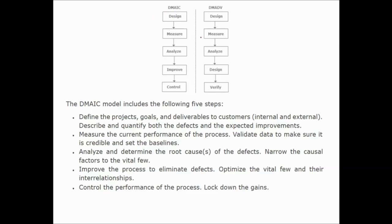For DMAIC, this model includes the following steps: Define the project goals and deliverables to customers, both internal and external. Describe and quantify defects and expected improvements. Measure the current performance of the process and validate data to ensure it is credible and set the baselines. Analyze and determine the root causes of defects and narrow down the causal factors of the vital few. Improve the process to eliminate defects and optimize the vital few and their interrelationships. Control the performance of the process and lock down the gains.